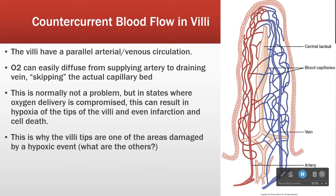If we zoom in and look at just one villus, here's our epithelium — one of the little tufts of carpet that lines the intestine. If you look, we can see that the arteries and veins here have a parallel arrangement, very similar to what we saw in the vasa recta in the kidney. Arterial supply comes in here, venous supply goes out here. Because of this arrangement, we have oxygenated blood sitting right next to deoxygenated blood.